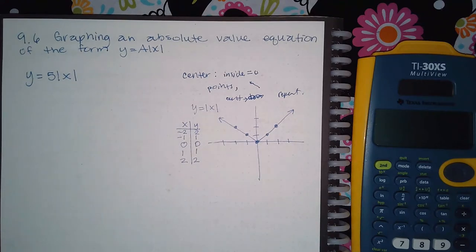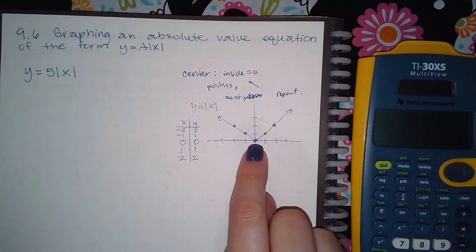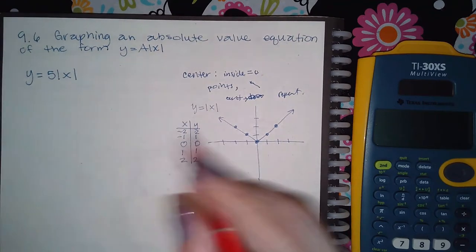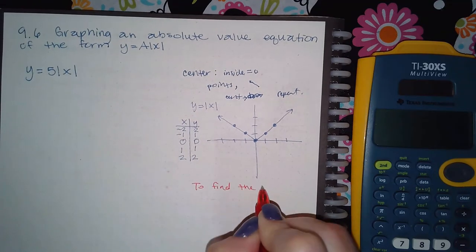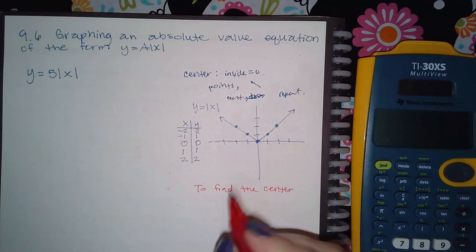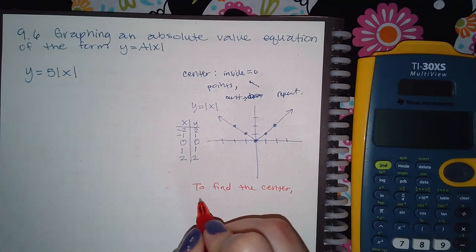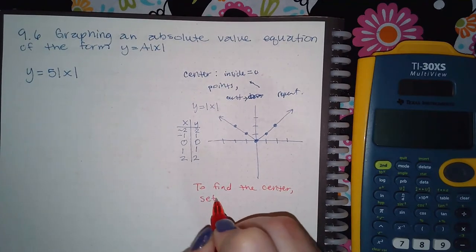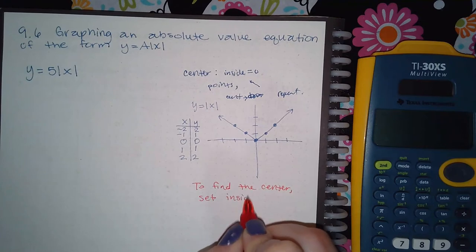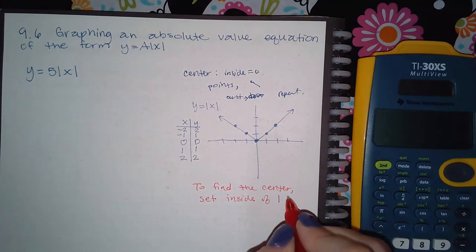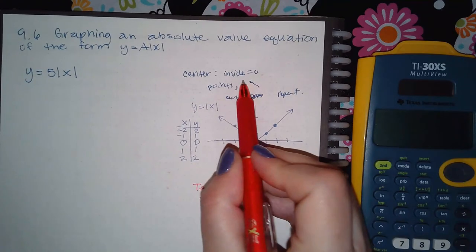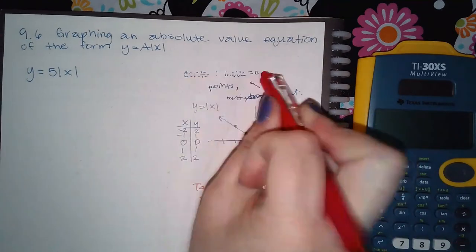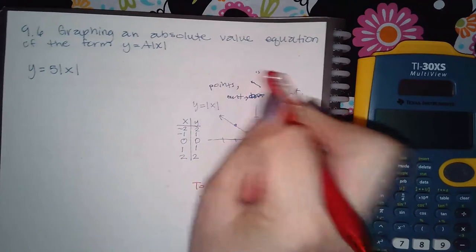So if you notice the center is 0 and I can find the center. So I'm going to say to find the center, you're going to set the inside of the absolute value bars equal to 0. And so that's what I have here by my little notes is to set the center, the inside equal to 0.